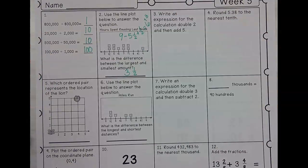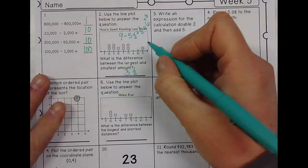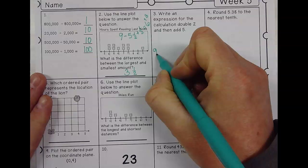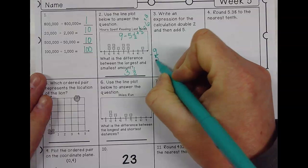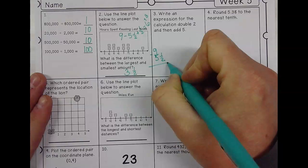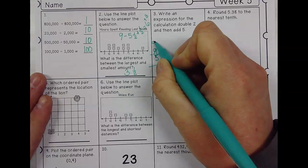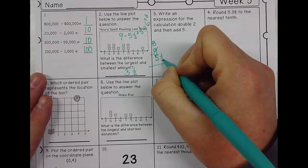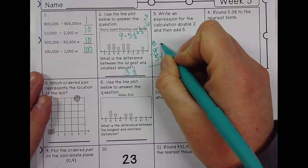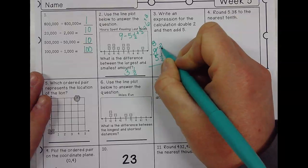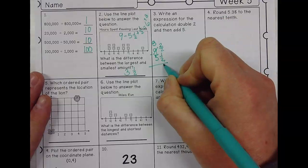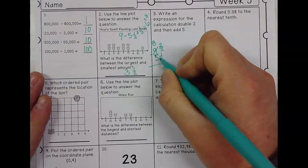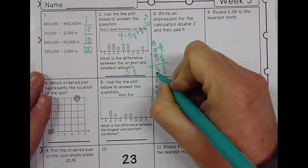You could also do it the way we've been doing it, which is what we've been doing for math. We've been saying nine minus five and a half. And then you're going to borrow from the nine, make the nine an eight. The whole, or for half, is two over two. Two over two minus one half is one half. Eight minus five is three. So I still get the same answer.